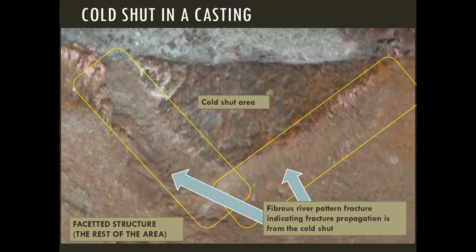Cold set in a casting is revealed by the fracture feature of a river pattern. Here you can see a river pattern emanating from the cold set area — an oxidized area — and from there a fibrous river pattern emerges. From this you can conclude that this failure is due to the manufacturing defect called cold set.